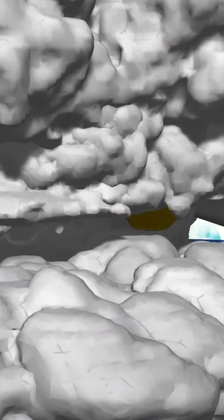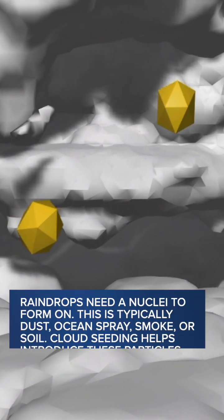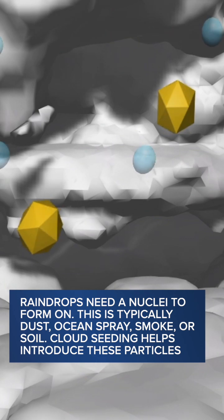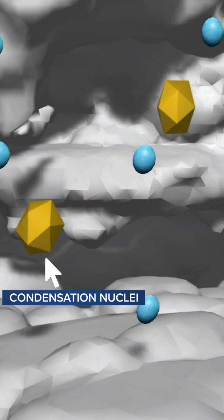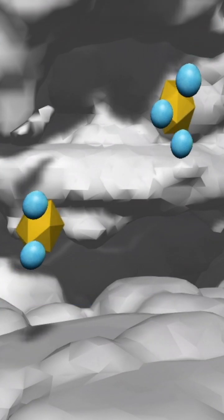When cloud seeding does take place, a specialized aircraft will fly through clouds and release substances like silver iodide or even common table salt. To form a raindrop, you need a surface like dust or a small particle for water to condense on. The goal of cloud seeding is to help raindrops form by providing those tiny surfaces — we call those condensation nuclei. However, cloud seeding doesn't actually create the clouds; it simply tries to speed up the natural process of raindrop formation by introducing these particles.